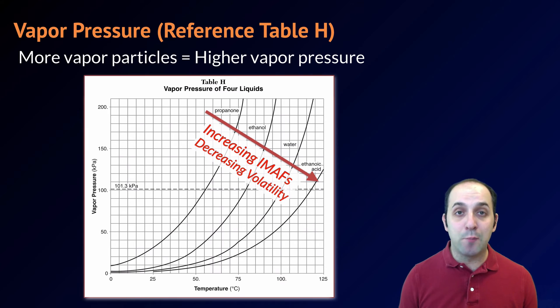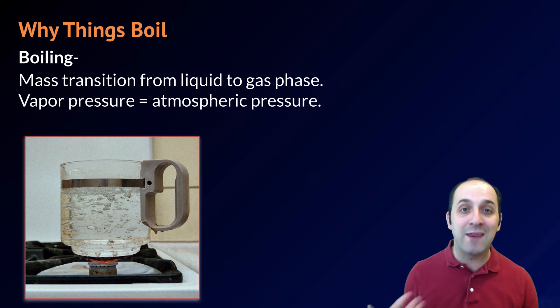You should be able to figure out the vapor pressure for any one of these four liquids at any particular temperature shown on this graph. Now that we have some understanding of vapor pressure, we can actually understand why things boil.